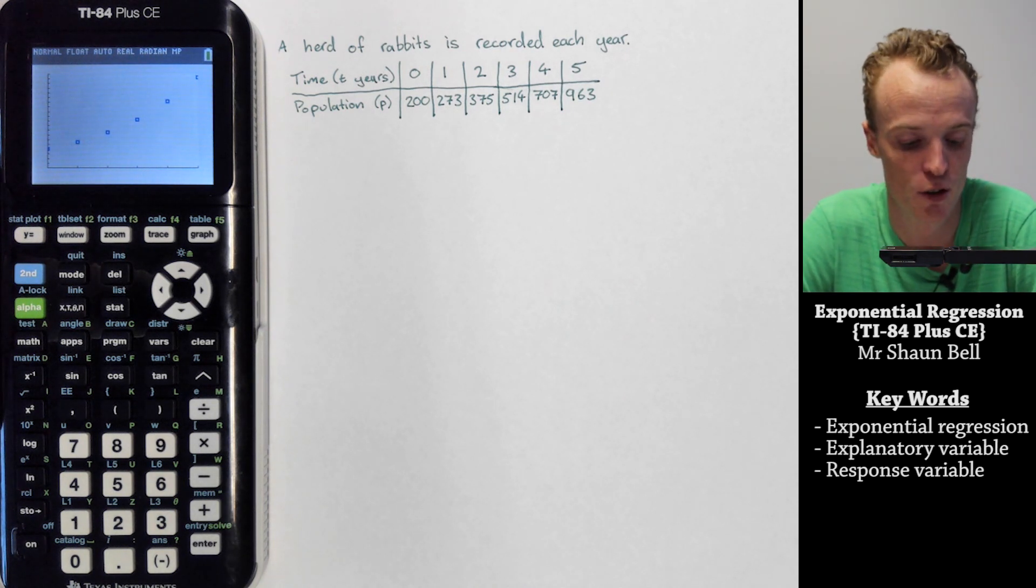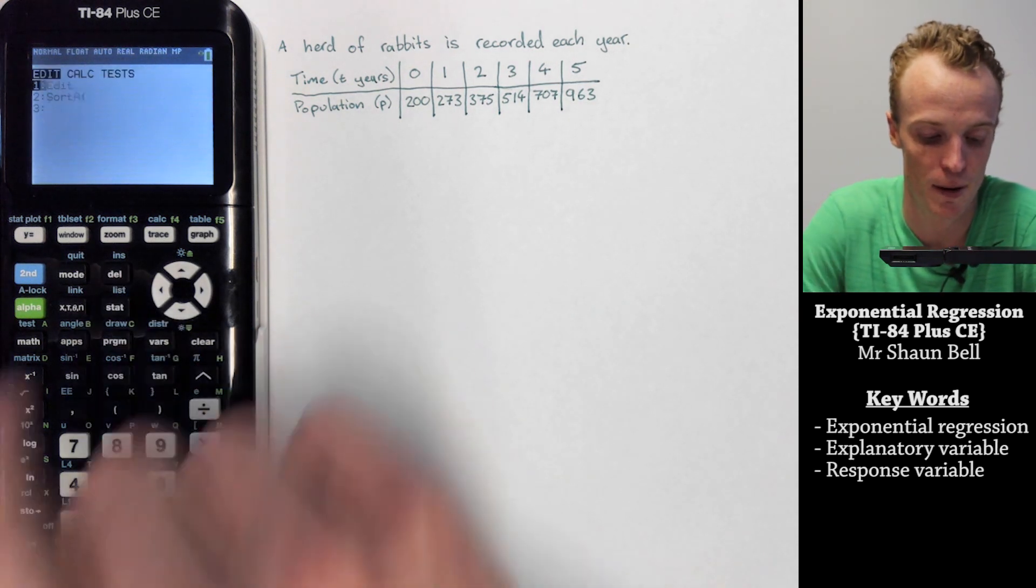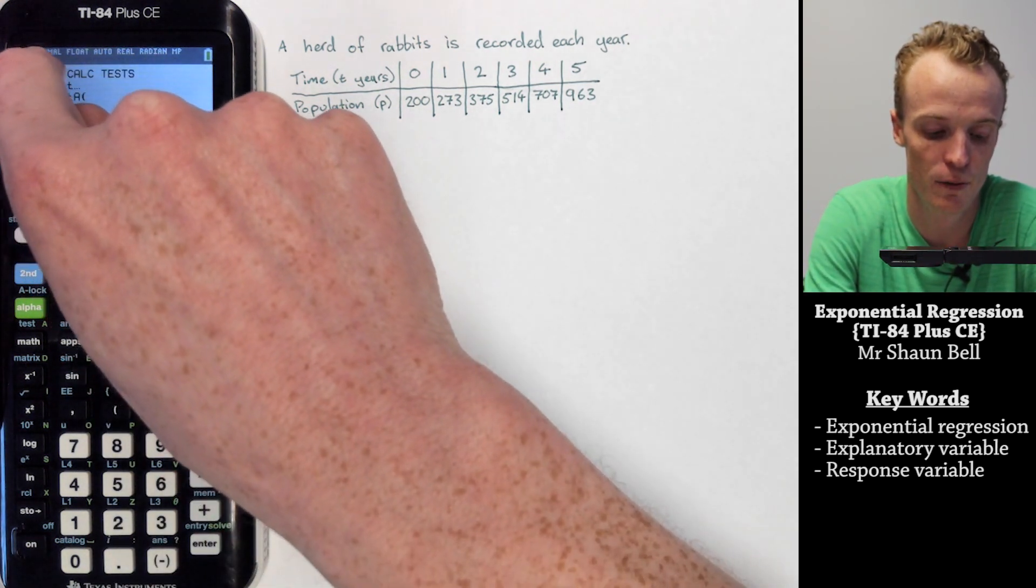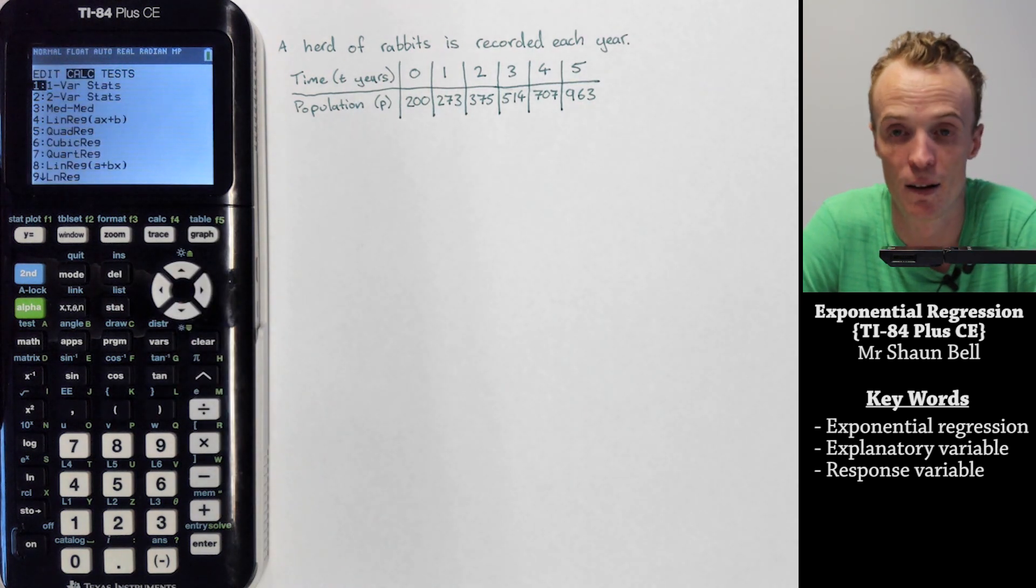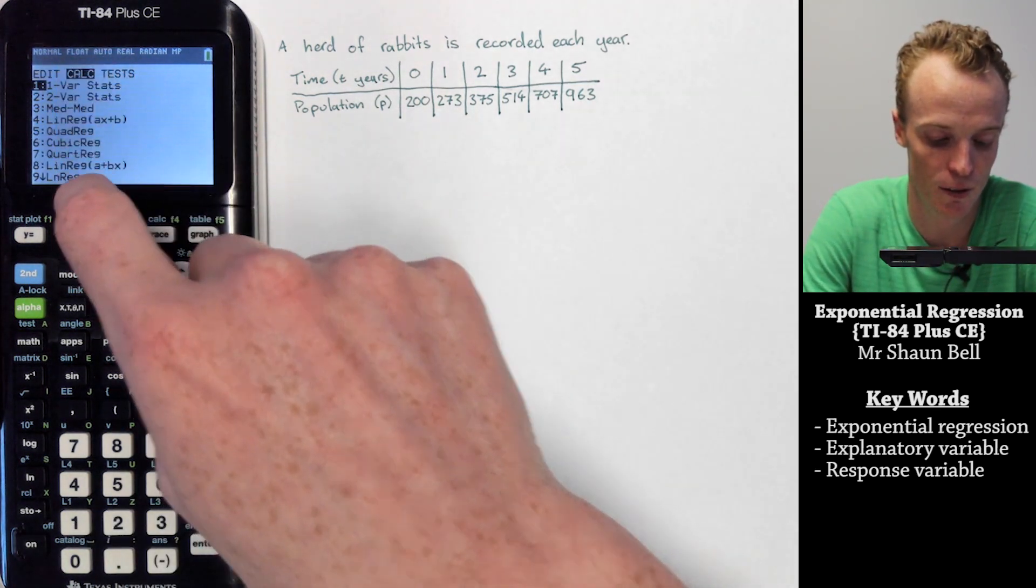To calculate the exponential model, you go to the stat button and instead of in the edit function, you want to move across using the arrow key to the calculate area. You'll have a list of things that you can calculate.